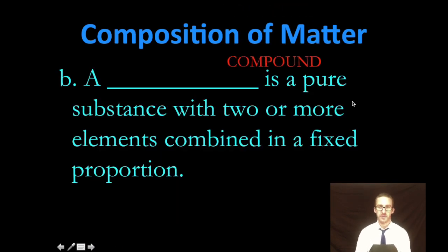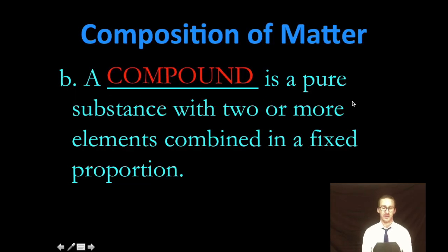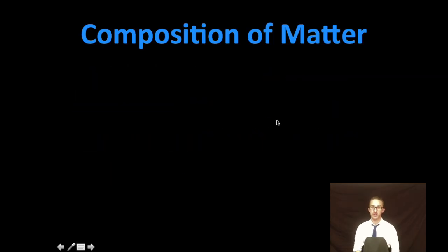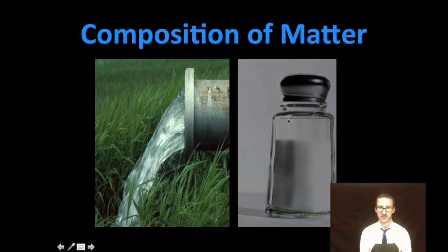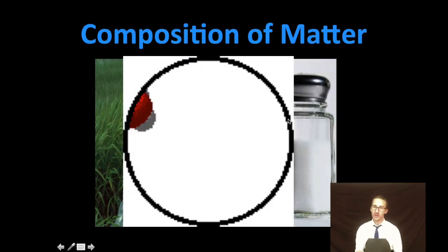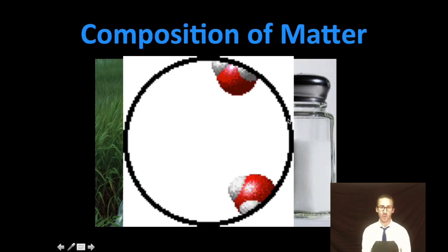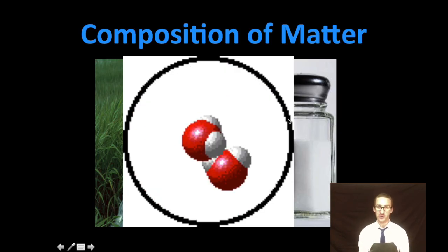The second type of pure substance is a compound. And a compound is still a pure substance, but now we've got two or more elements combined or bonded in a fixed proportion. So for compounds, think about water or salt. At the molecular level, notice here, as we look at this sample of water, that you've got two different types of atoms. Compound.